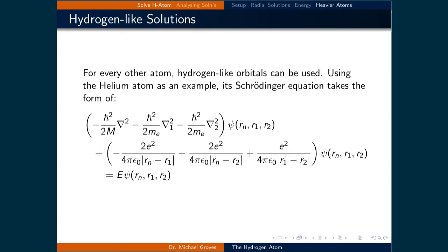Let's now set up the Schrödinger equation for other elements. Using the helium atom as an example, which has two electrons, the Schrödinger equation takes the form of negative h-bar squared over 2 capital M times the Laplacian minus h-bar squared over 2 times the mass of the electron times the Laplacian minus h-bar squared over 2 times mass of the electron times the Laplacian, and that's all operating on psi.